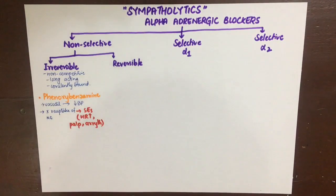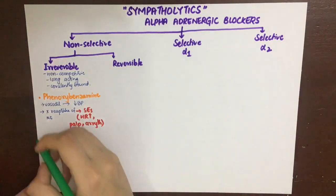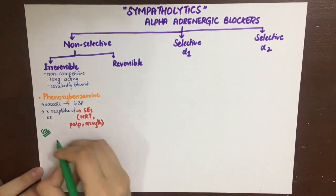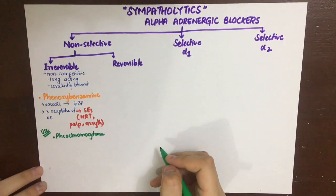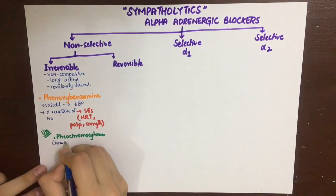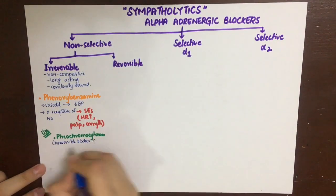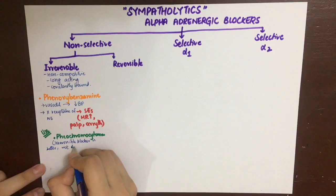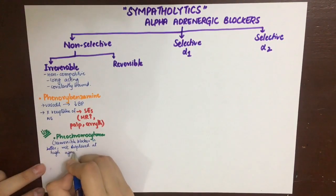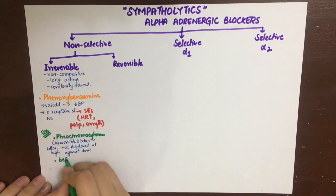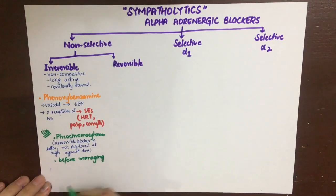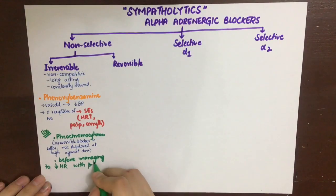Phenoxybenzamine is preferred in pheochromocytoma because if we use a reversible blocker, the tumor — being a tumor of the adrenal medulla — releases large amounts of catecholamines. These catecholamines would reverse a reversible blocker and act on the receptor. So we need an irreversible blocker that cannot be overcome by high catecholamine concentrations.